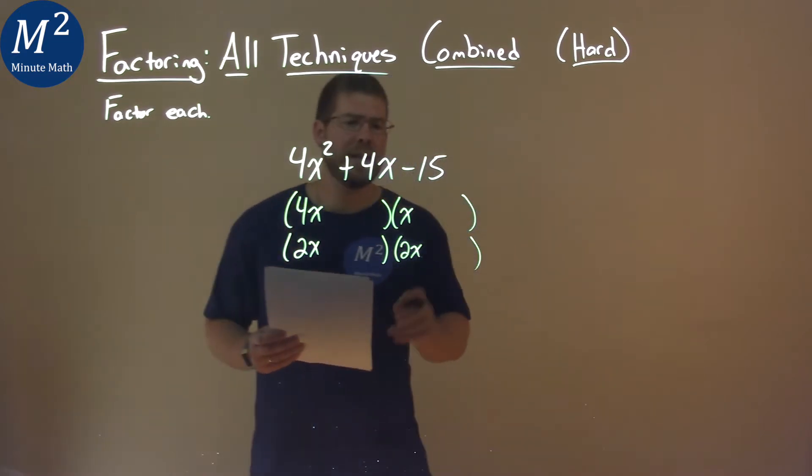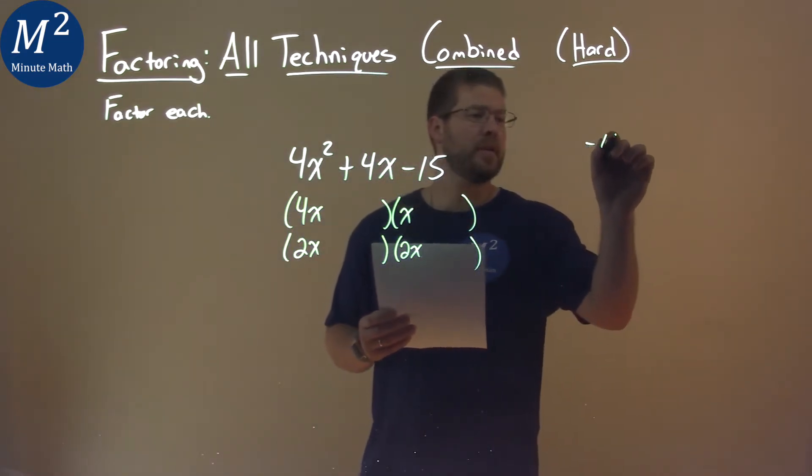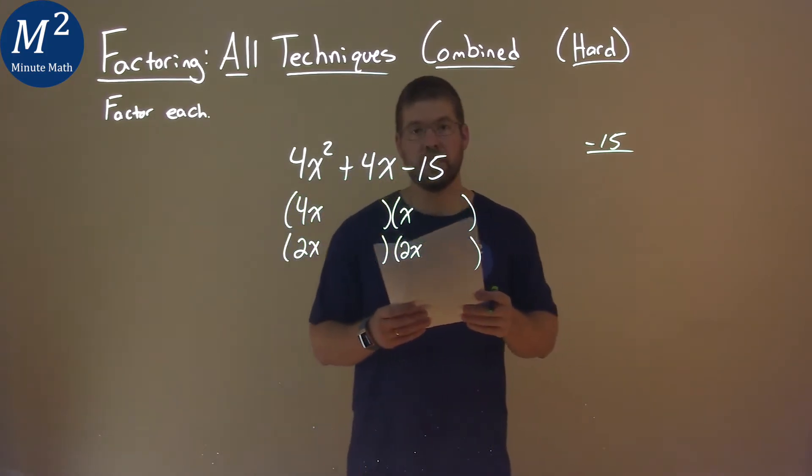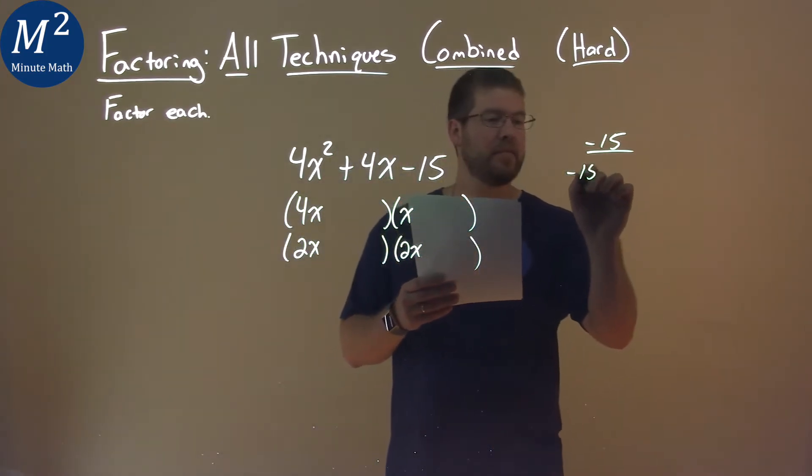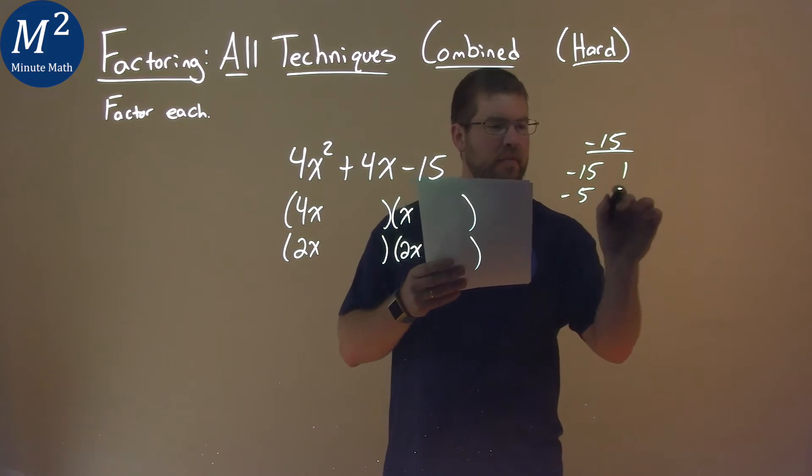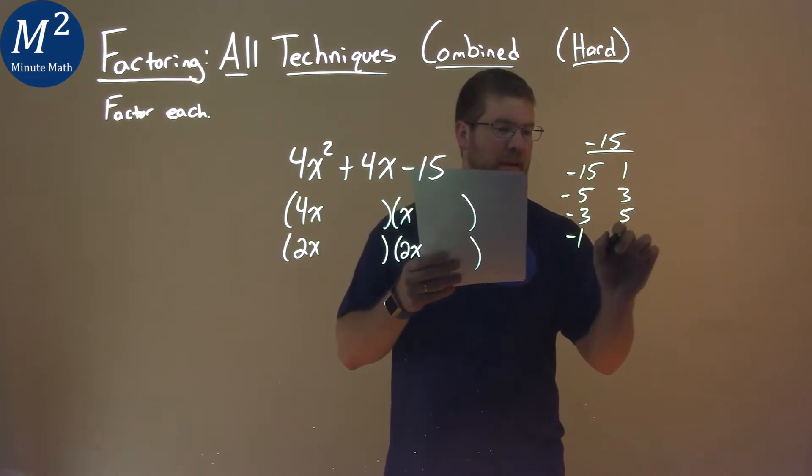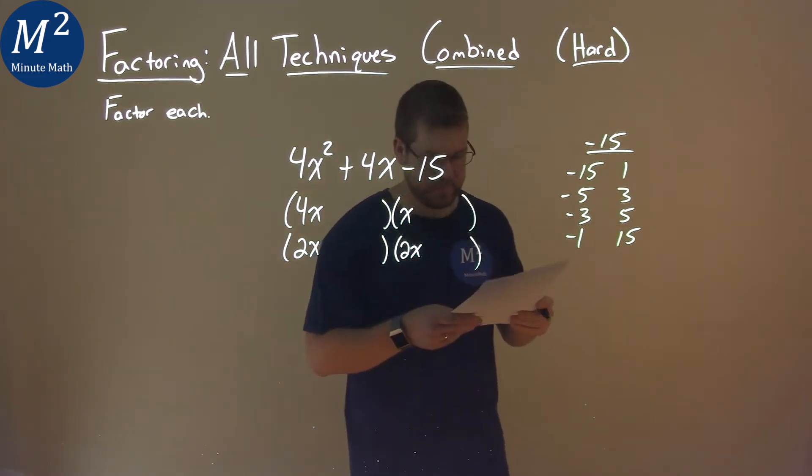So with that, we need to take our c value, negative 15, and find two numbers that multiply to be negative 15. Negative 15 and 1, negative 5 and 3, negative 3 and 5, and don't forget negative 1 and positive 15.